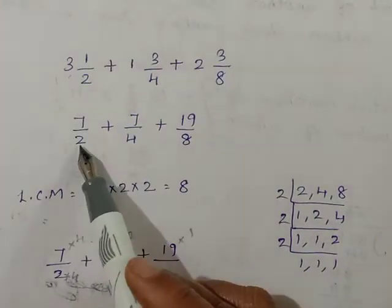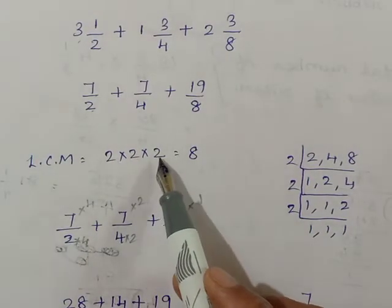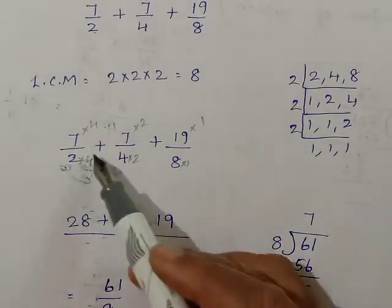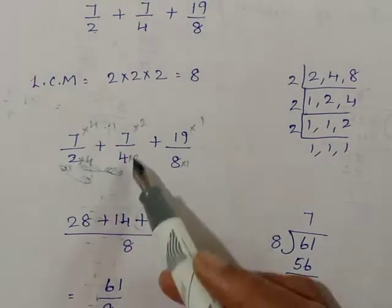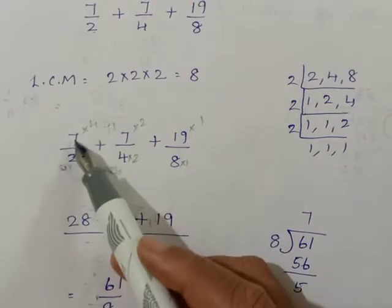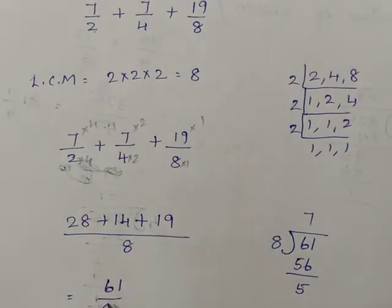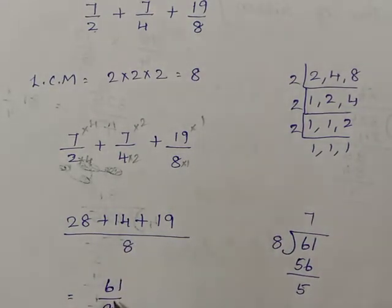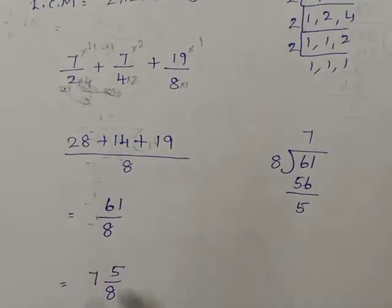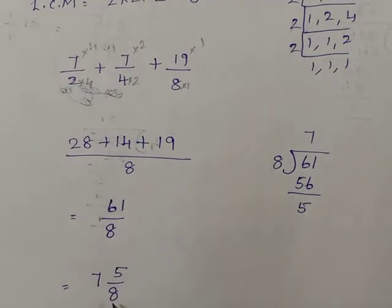The denominators are different so we find the LCM. LCM of 2, 4, and 8 is 8. Converting: 2 becomes 8 by multiplying by 4; 4 becomes 8 by multiplying by 2; 8 stays as 8. So 7 fours are 28, plus 7 twos are 14, plus 19 ones are 19. The total is 28 plus 14 plus 19 equals 61, giving 61 by 8. Converting to a mixed fraction: 61 divided by 8 is 7 and 5 by 8.